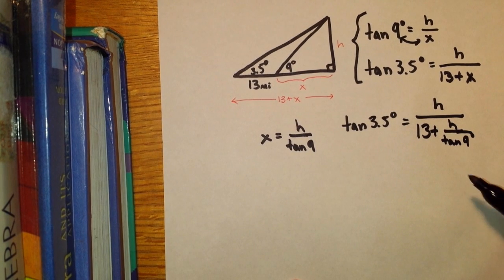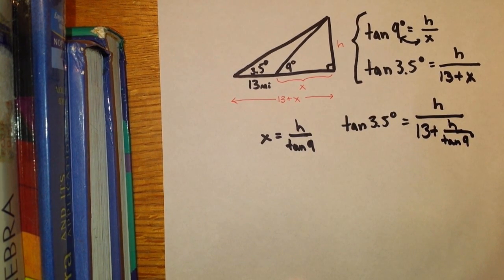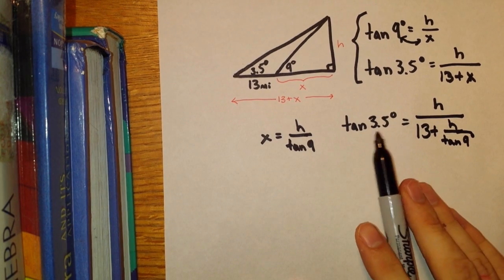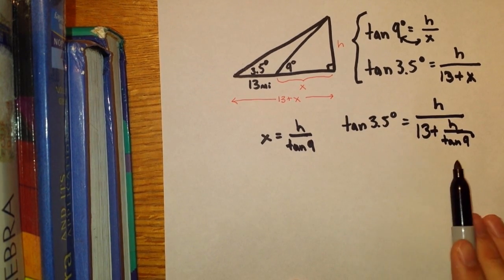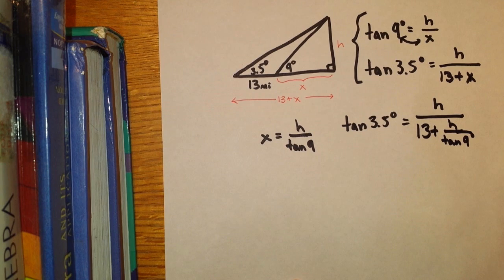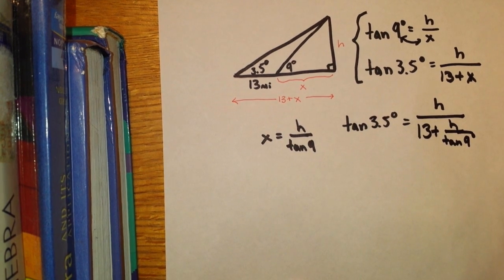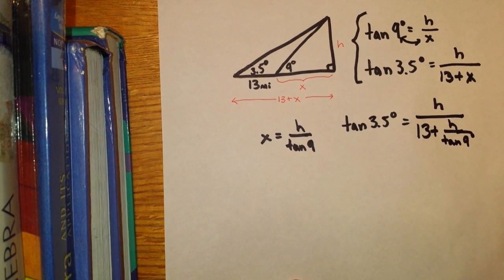Now recall that tangent of 3.5, tangent of 9, these are just numbers, they're decimals. Tangent of 3.5 is about 0.06, tangent of 9 is about 0.16. I'm going to leave them in exact form, because if we convert them to decimals now, we'll have a pretty large rounding error. And our final answer could be off by more than 5% or so.